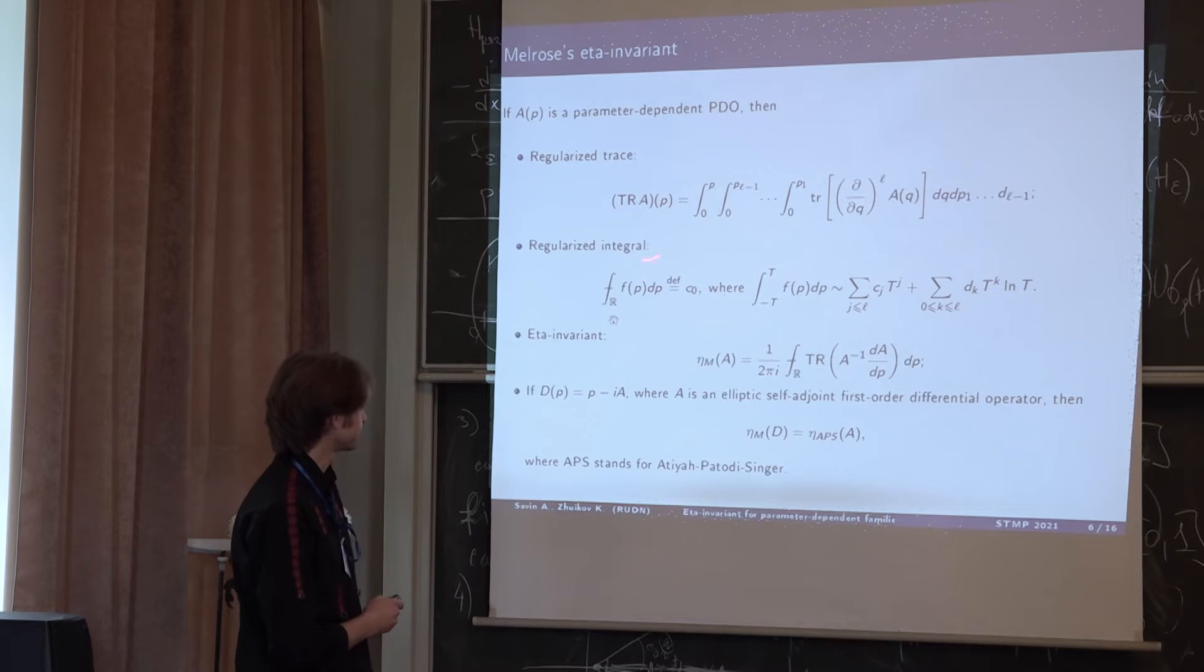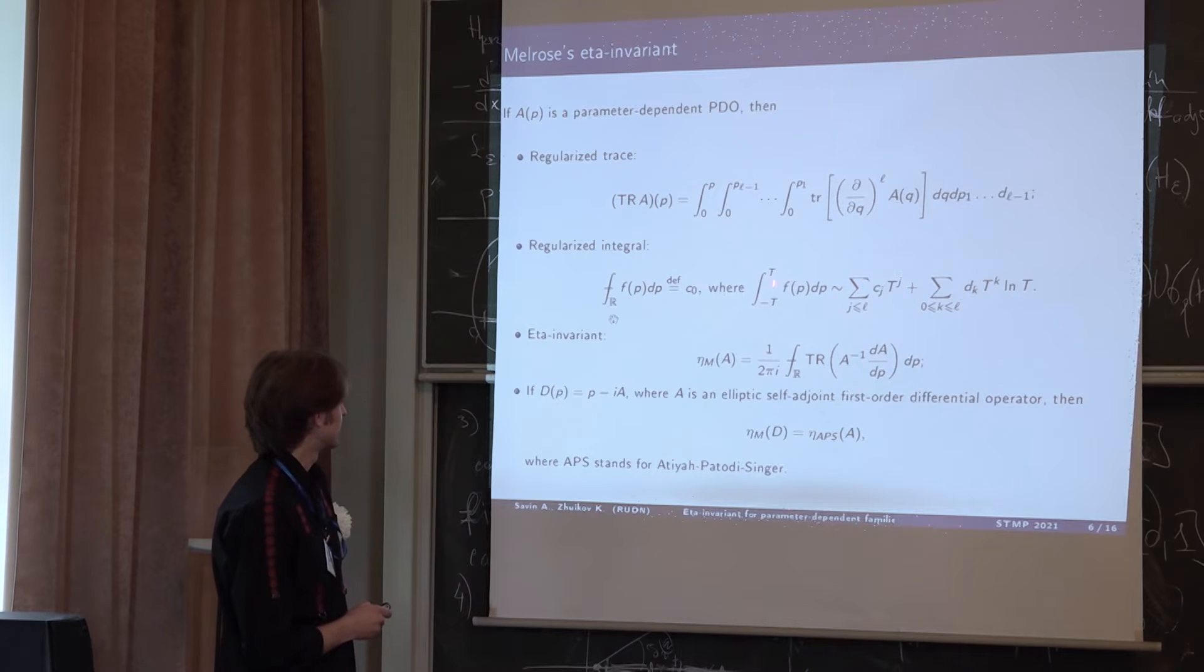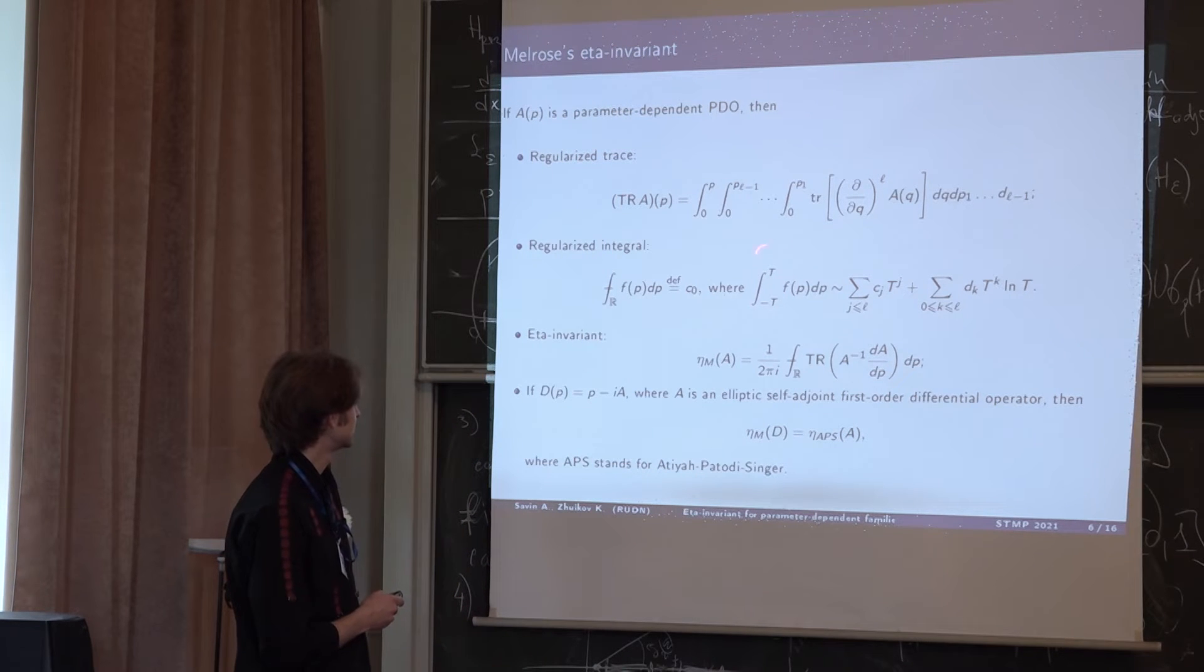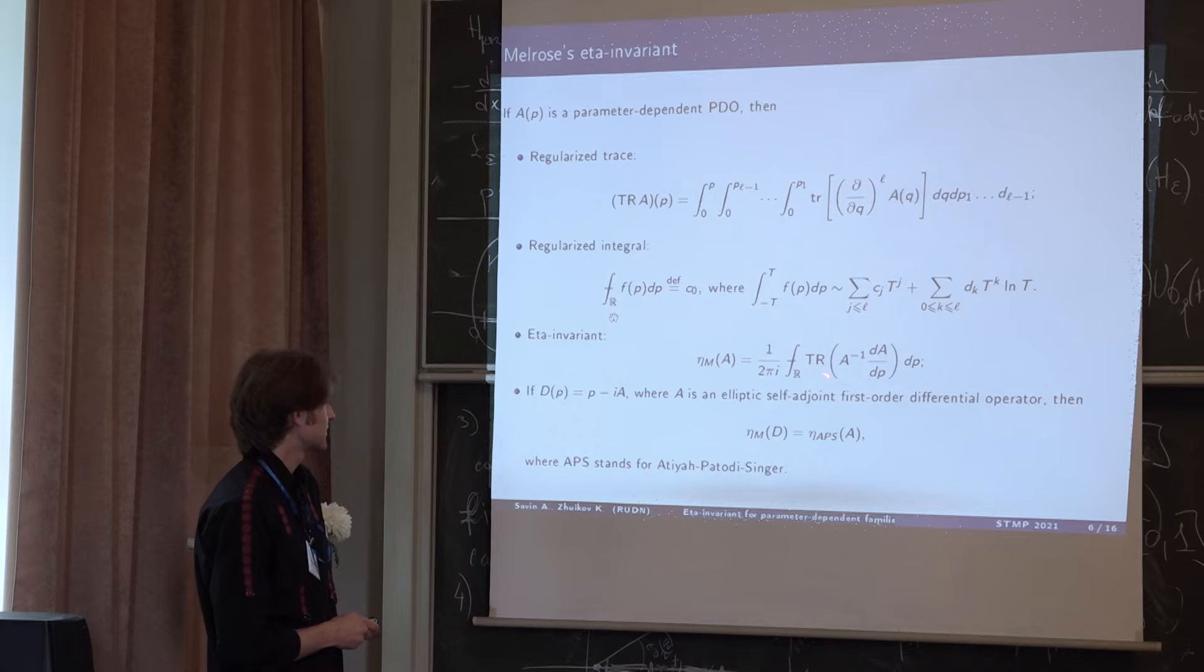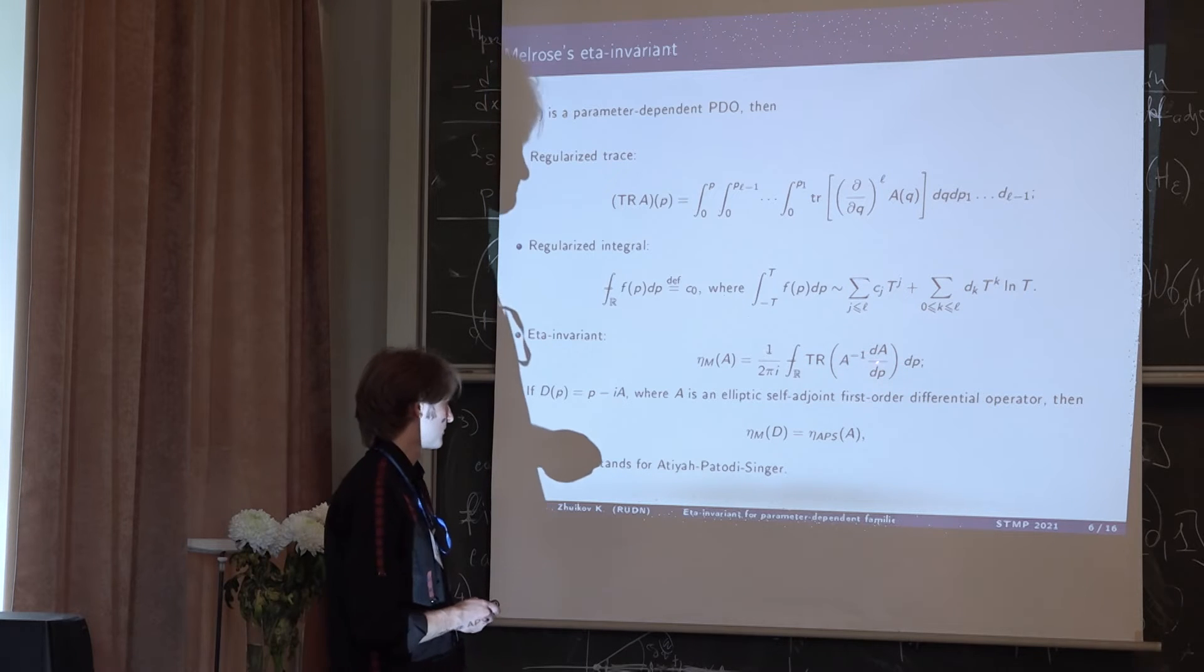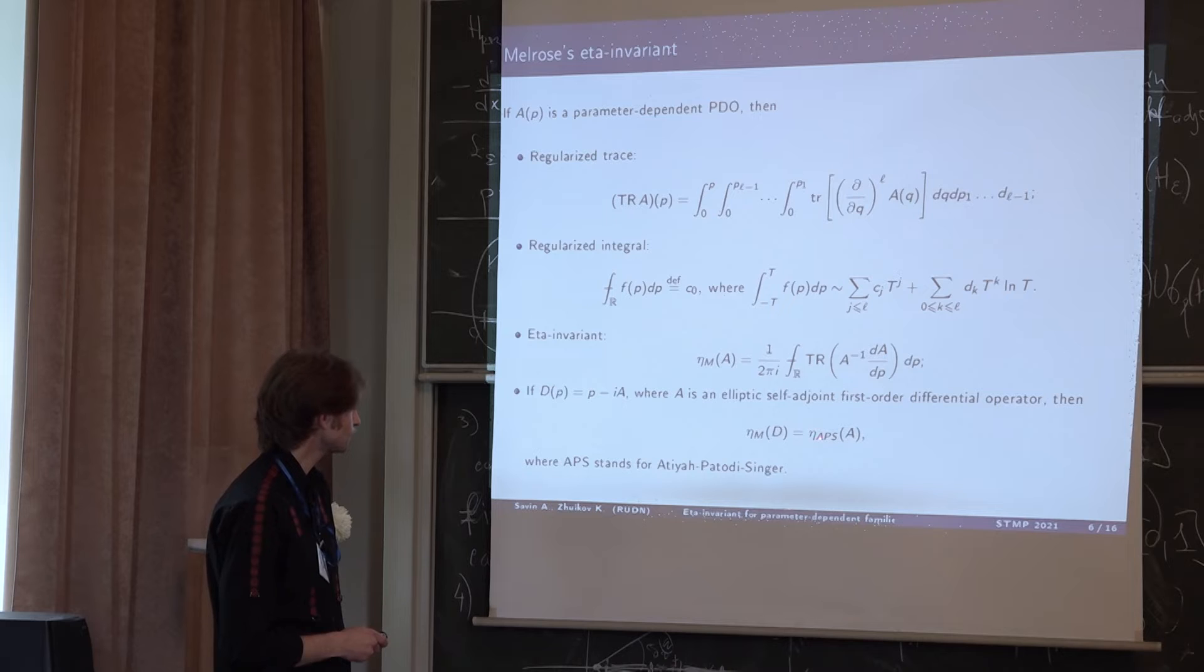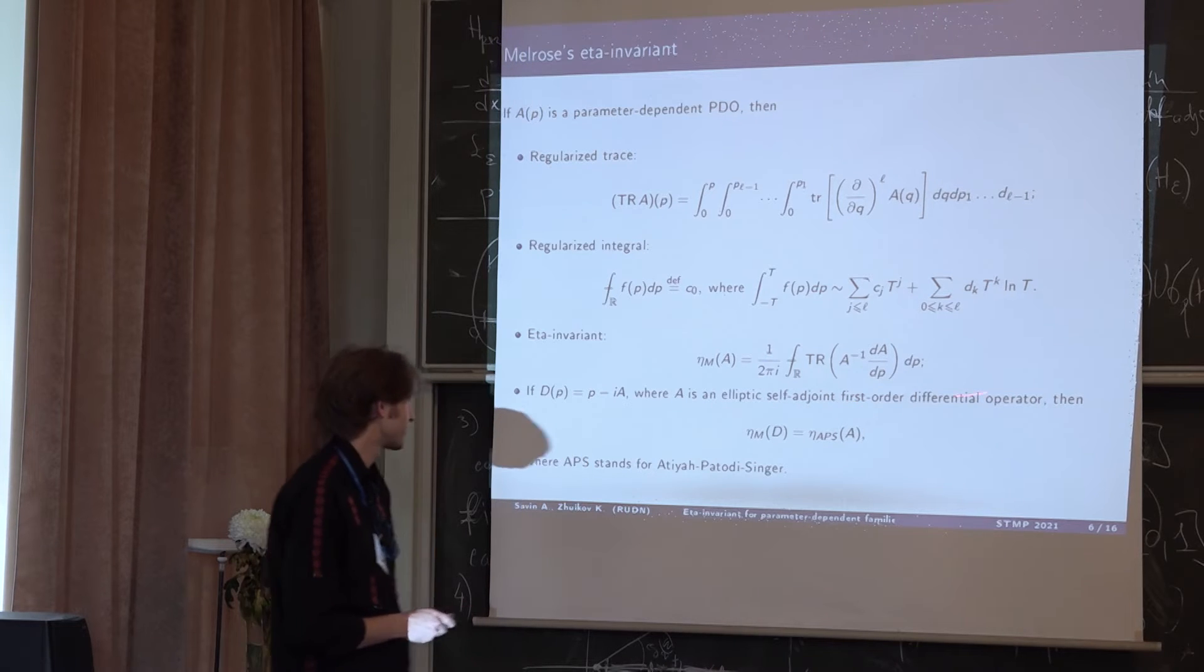After that, we take regularized integral because the trace may grow at infinity and it appears that if F from special space, it has special asymptotics at infinity. Such integral from minus T to T when T goes to infinity, the integral has these asymptotics. We take the zero coefficient and we say that this is our regularized integral. Having these two regularizations, we can define the eta invariant. This is the generalization of the winding number. This formula is actually the generalization of Atiyah-Patodi-Singer eta invariant in case when the family D of P equals P minus iA, where A is elliptic self-adjoint first order differential operator.